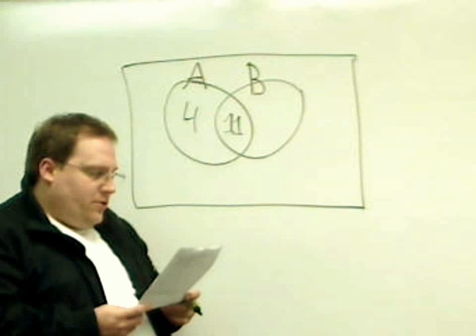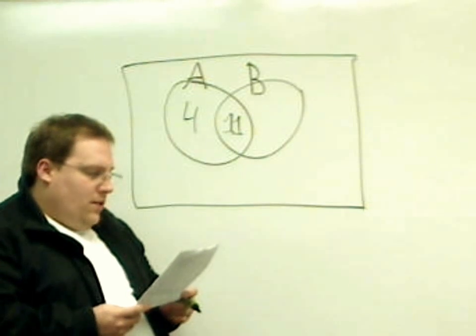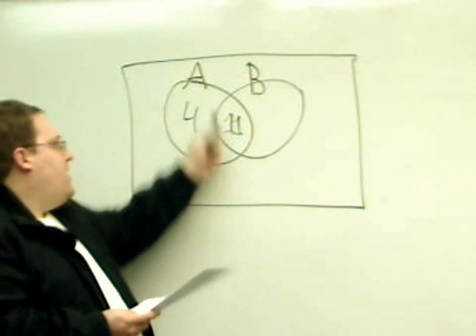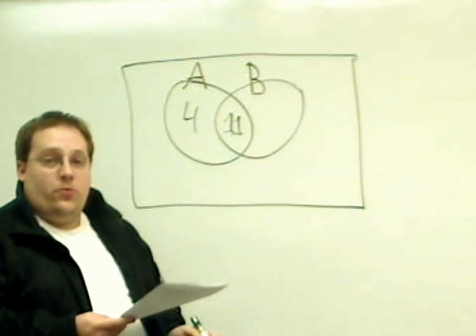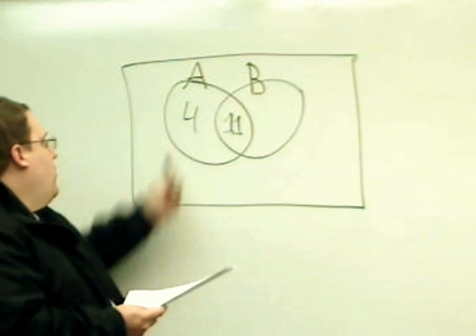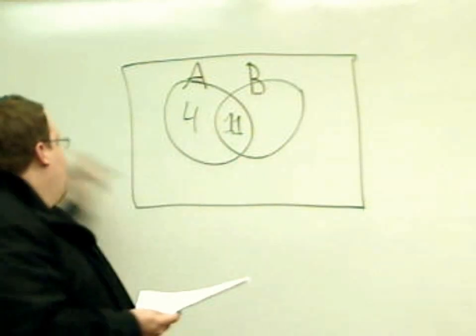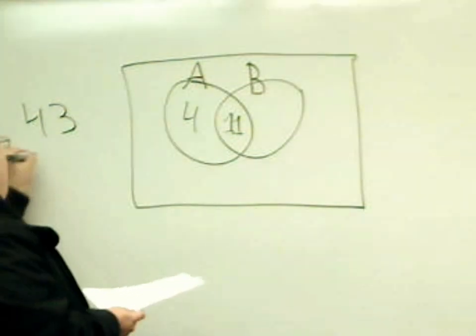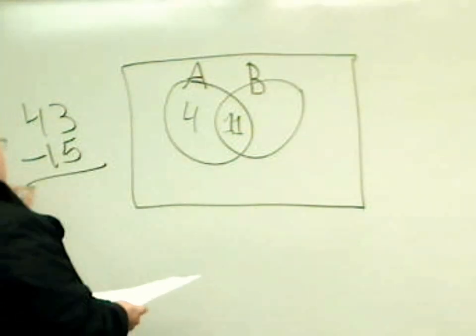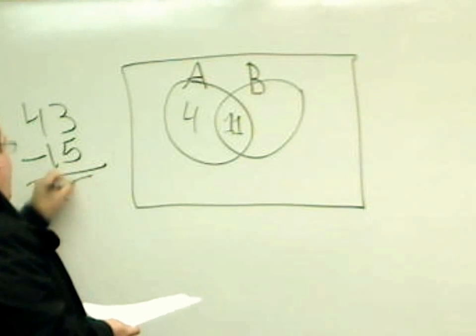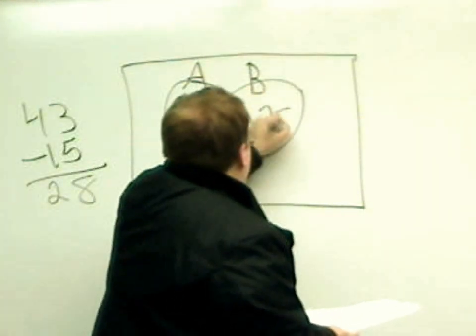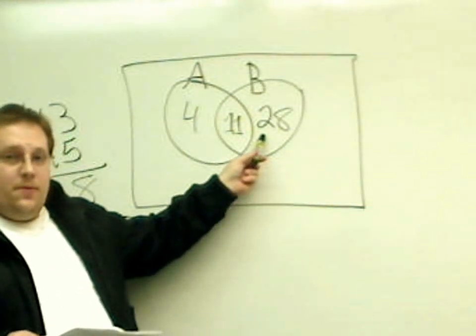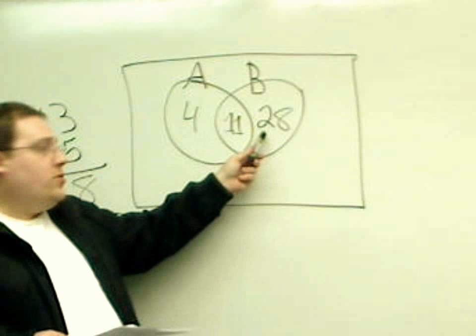Now, it also says that the number of things that's in A or B is 43. So that means this, this, and this should add up to 43 things. Well, there's 15 of them right there. So if I take 43 and I subtract 15 from it, I get 28. So the number of things, the number of elements in set B that's not also in set A would be 28.